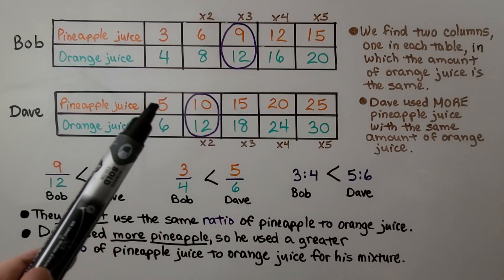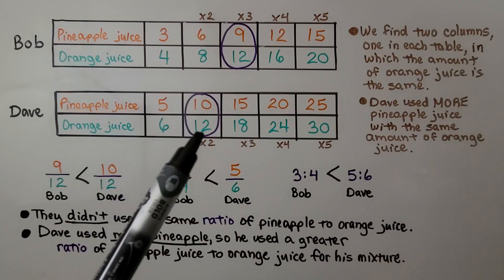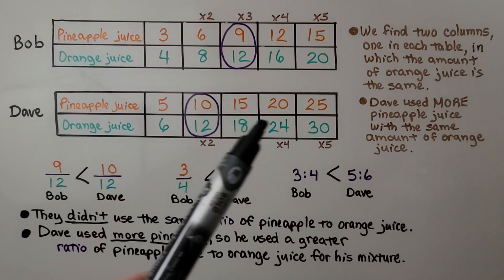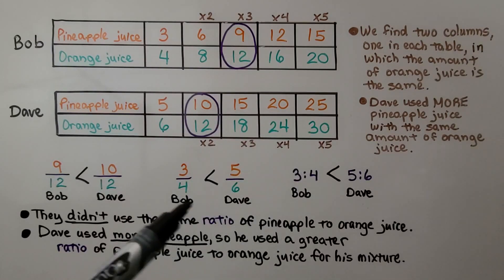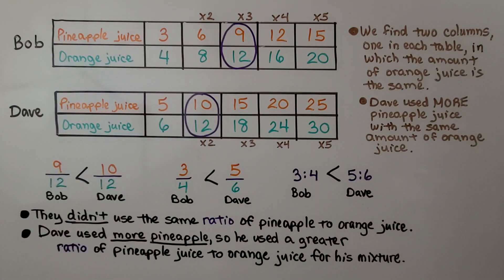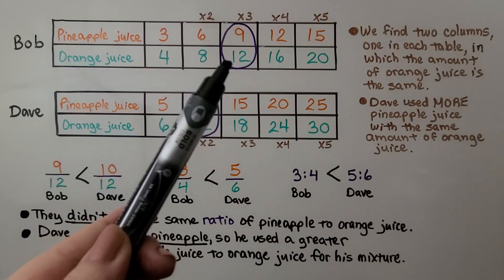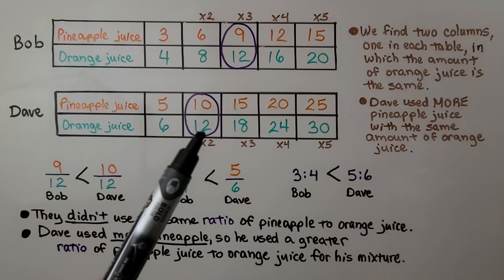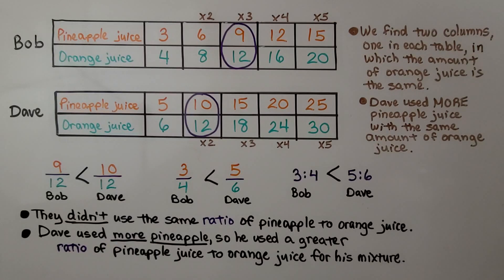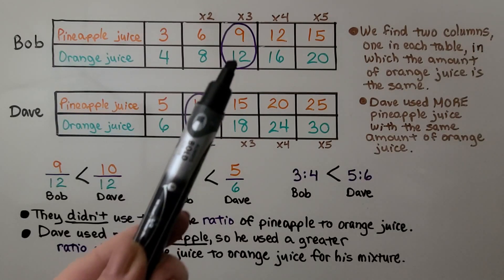We do the same thing for Dave, who had 5 cups of pineapple and 6 cups of orange. Multiplying by 2 gives 10 and 12; then by 3 and by 4 and by 5. Looking at the two tables, there is one column in each where the amount of orange juice is the same — 12 cups of orange juice in both. We can treat these like common denominators: 9 twelfths and 10 twelfths.